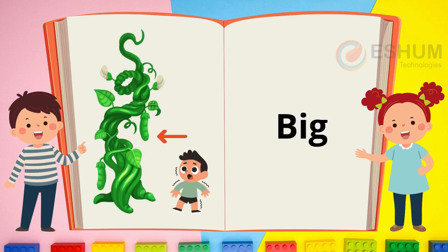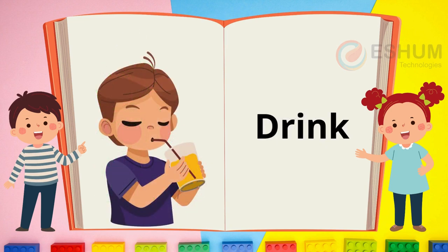Big. The arrow is pointing to a big beanstalk. The boy is little. The boy is shocked by the big beanstalk. What is big around you? Drink. The boy is drinking something — it could be orange juice. Do you drink milk?